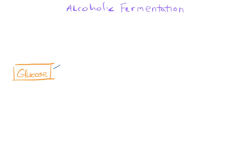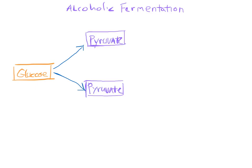Let's take a look at the process of alcoholic fermentation. As you know, it begins with a molecule of glucose. Chemical reactions cause the glucose molecule to split into two, resulting in two molecules of pyruvate.